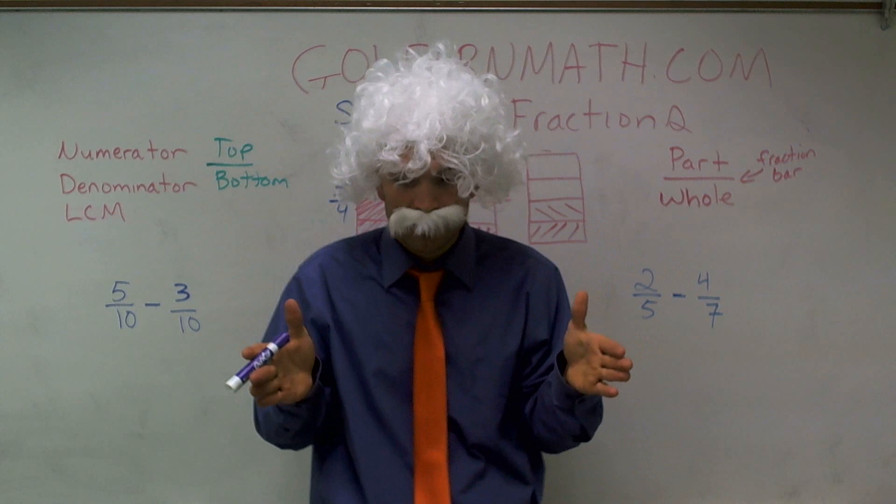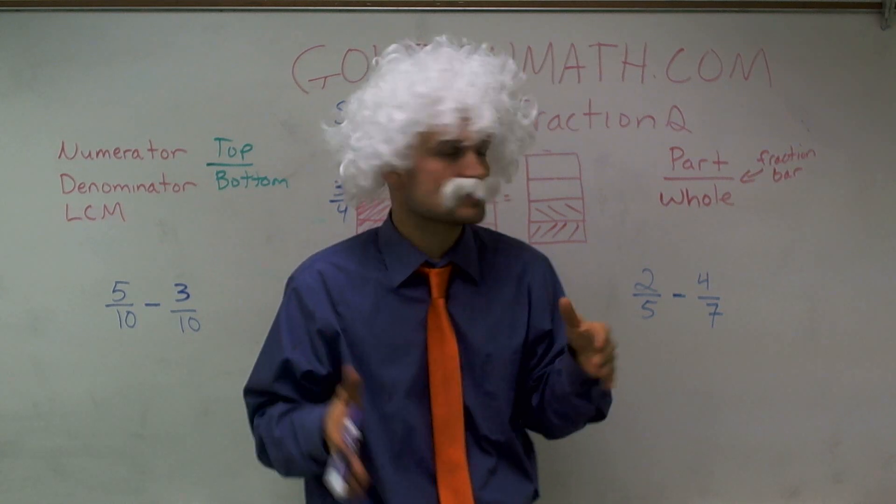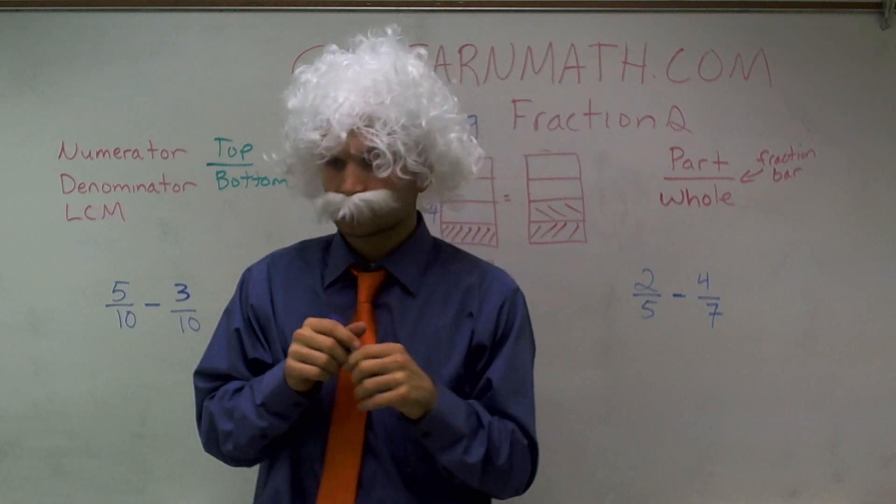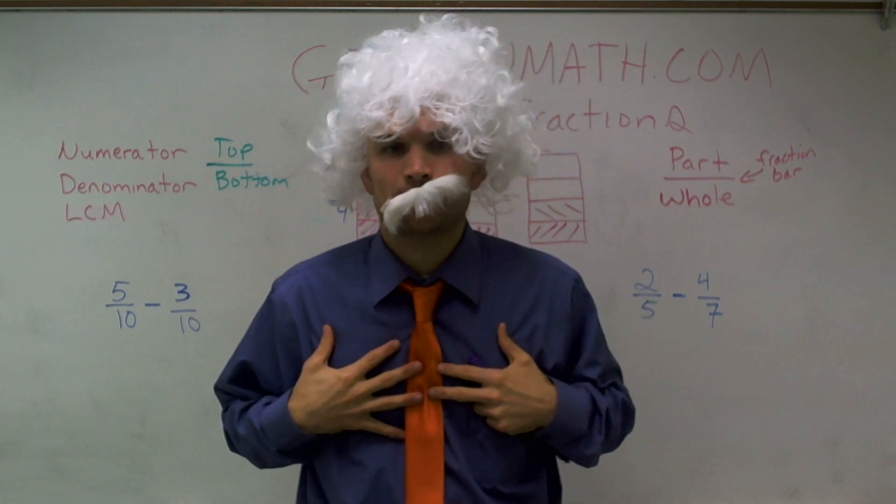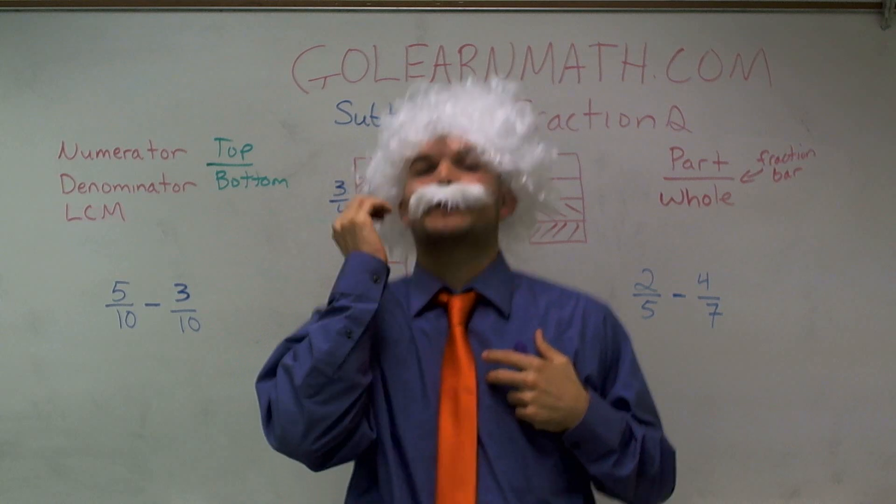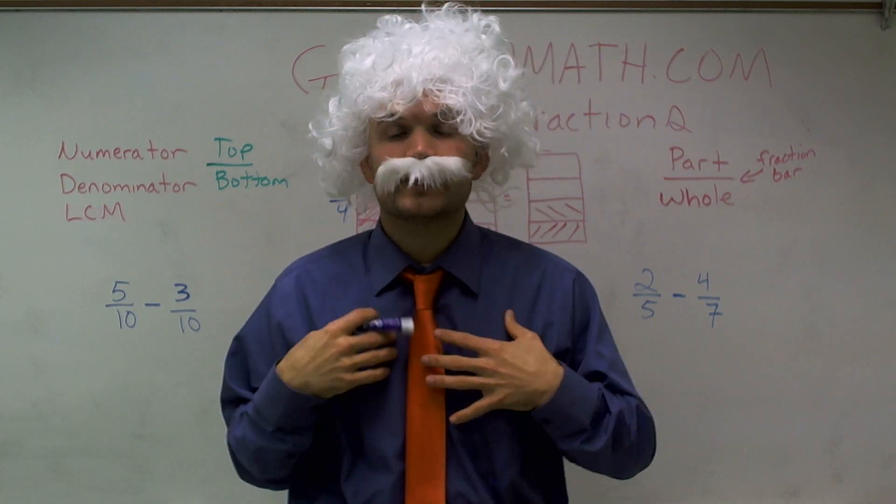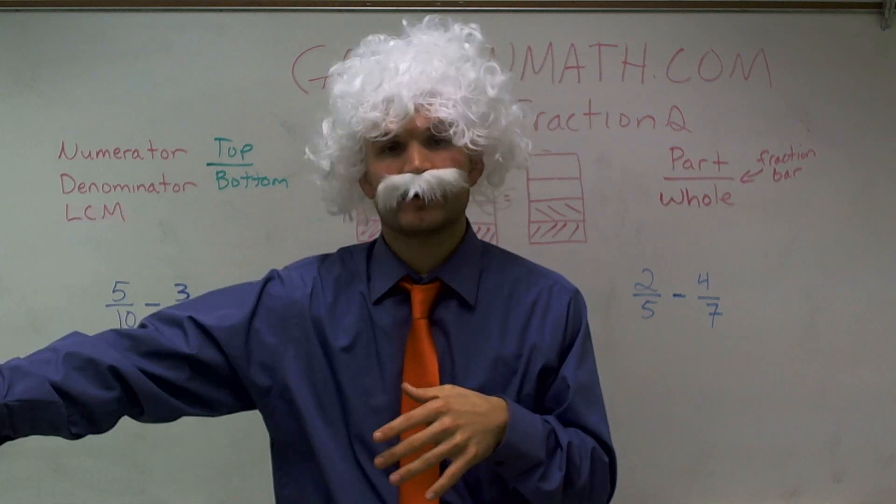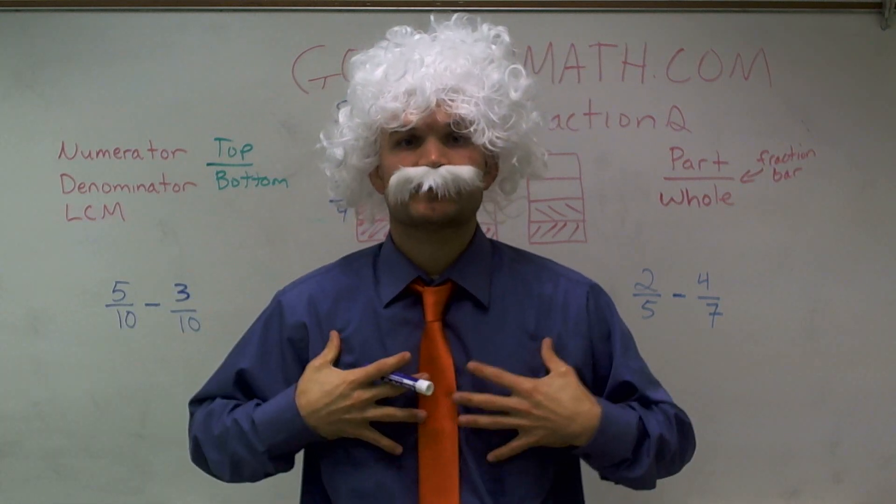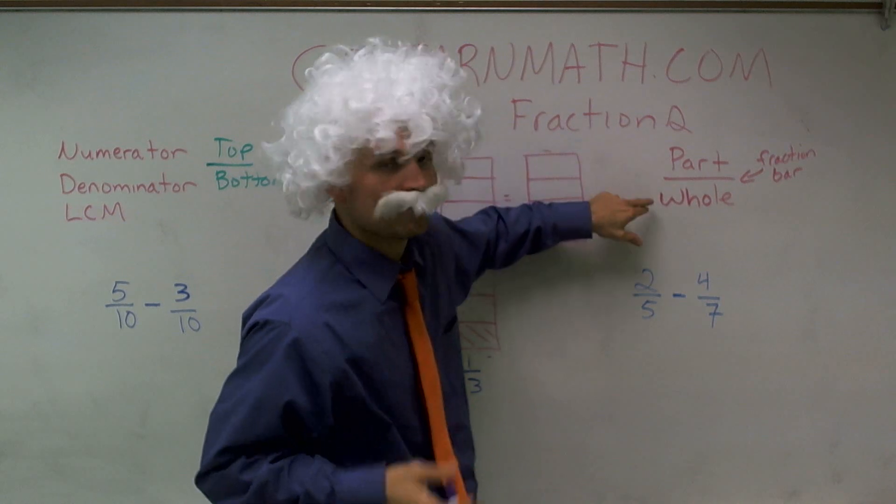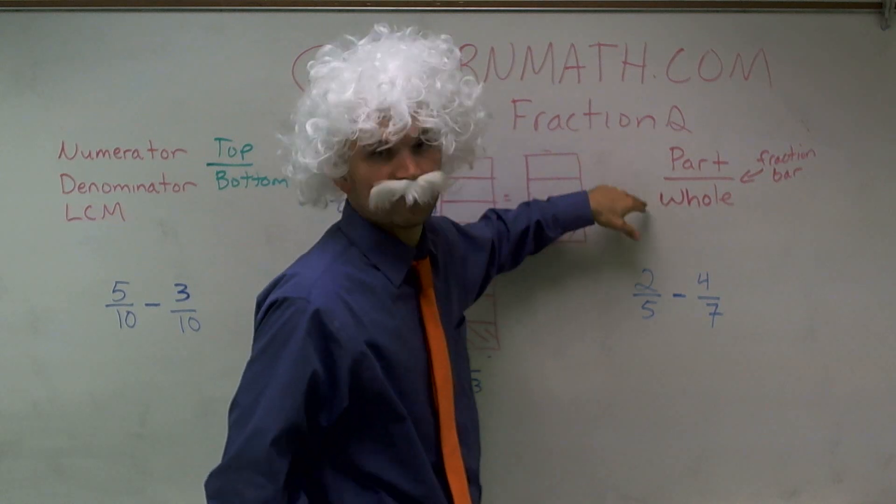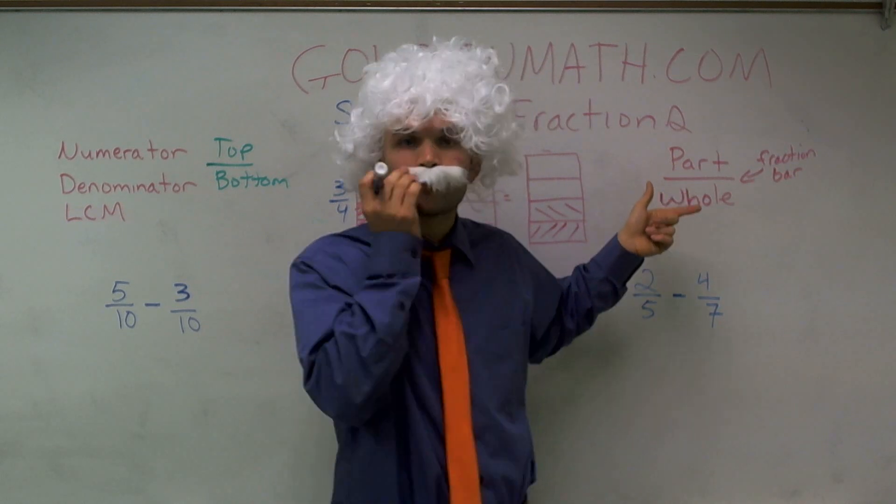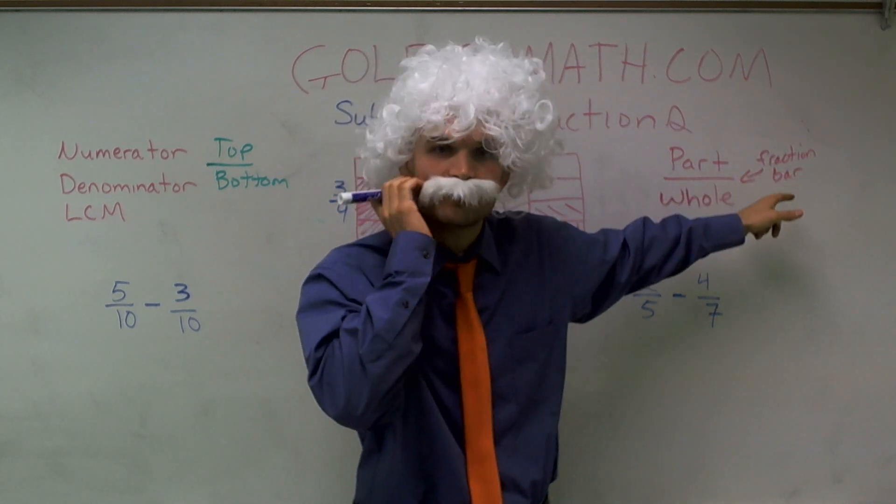So if a whole candy bar is divided into four different parts, I have four parts over a whole. Now, let's say I want to keep three of those parts, and I only want to give one of those four parts to a friend. So therefore, I've given away one fourth, and now what I have is three parts out of the whole. So you could say I have three fourths. Now, in a fraction, we divide how many parts we have, what we're dealing with, over the whole by what we call a fraction bar.